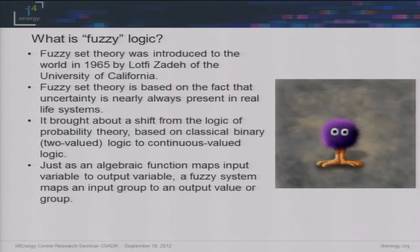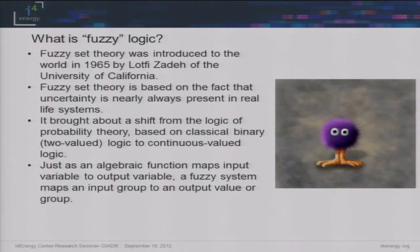A fuzzy system can actually map an input group of variables to a single output value or to a group of output variables. Groups of output variables are obviously more complex in terms of computational time. But if you pull in an input group and pull out a single output value, you get really quick computational time — literally it would probably run within five to ten seconds, which was really awesome.